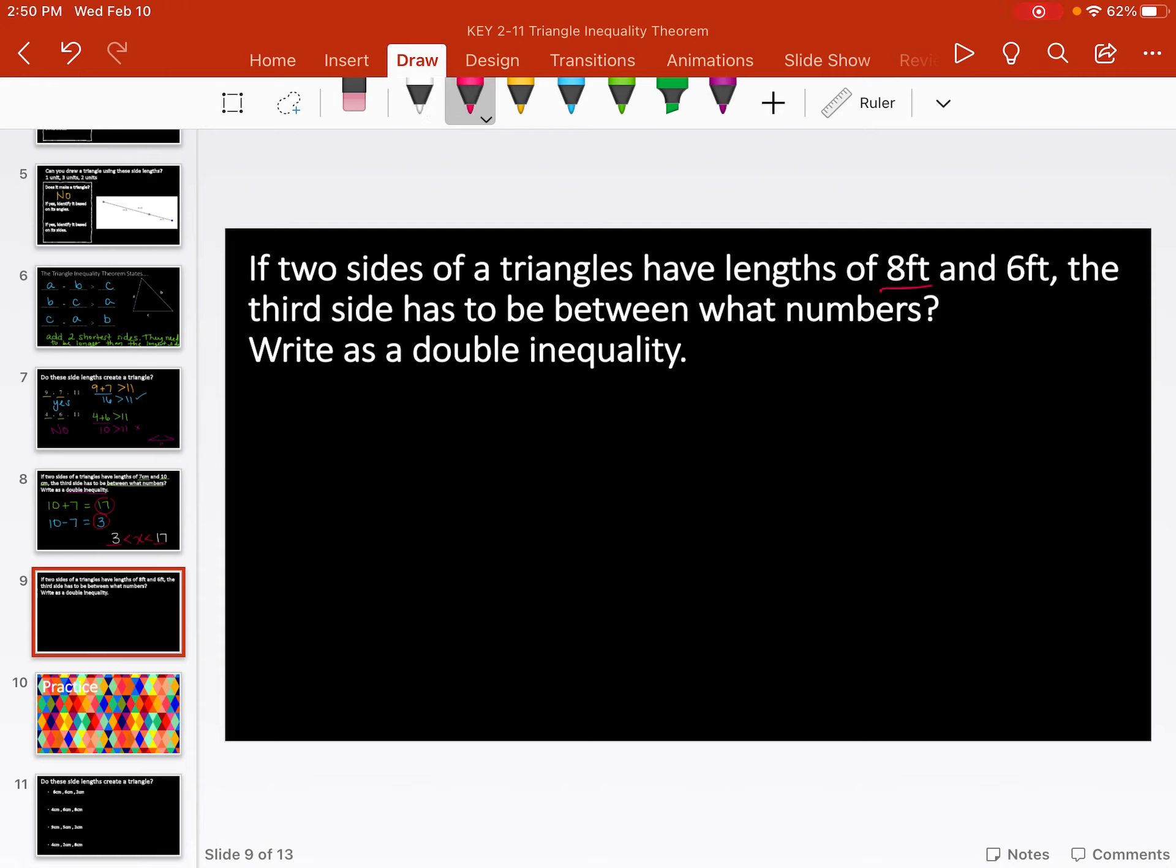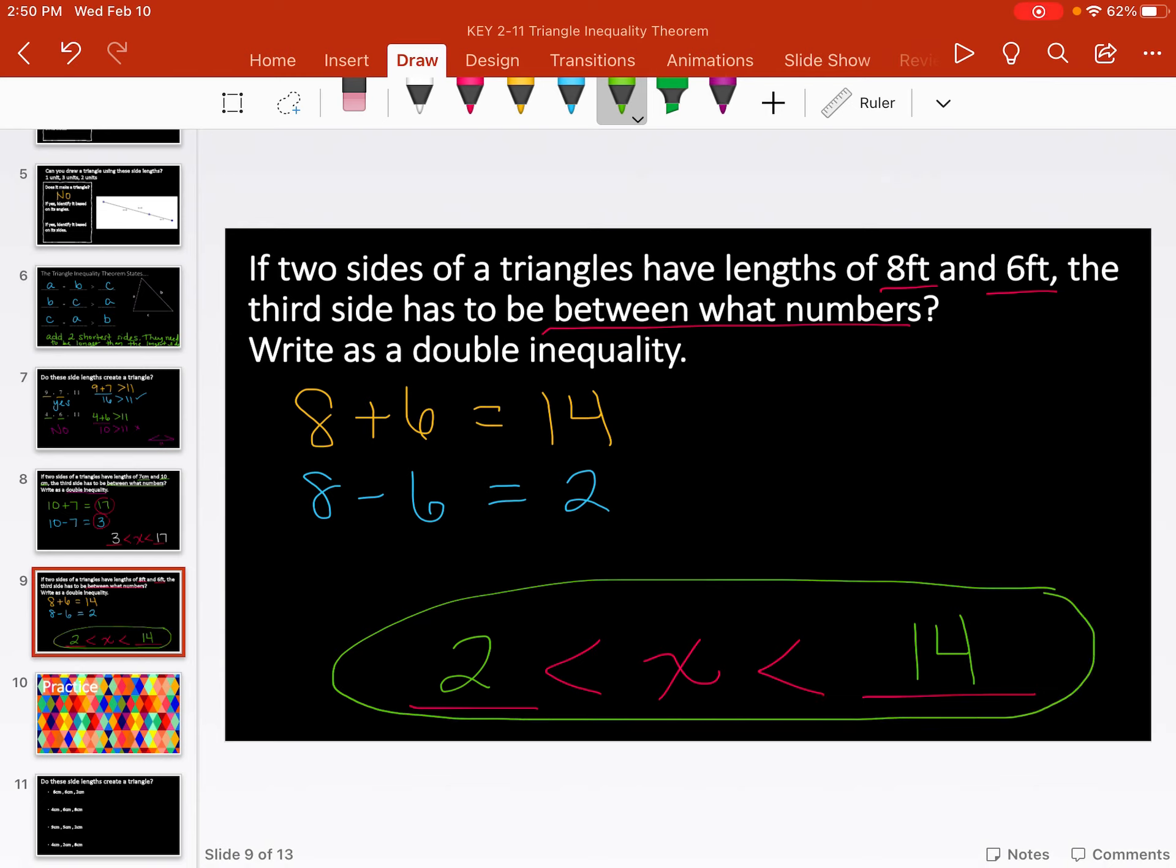Let's try another one. Same exact idea. This time they gave me 8 feet and 6 feet. We're going to figure out what numbers it's between. We're going to write our double inequality. So it's going to be something is less than x is less than something. We got to figure out what those two blanks are. We're taking 8 plus 6, which is 14. And we're taking 8 minus 6, which is 2. And that's what I'm going to plug in. So 2 is less than my side length because 2 is too small. 14 is greater than my side length. 14 is too big. So 2 is less than x, which is less than 14. That would be my final answer.